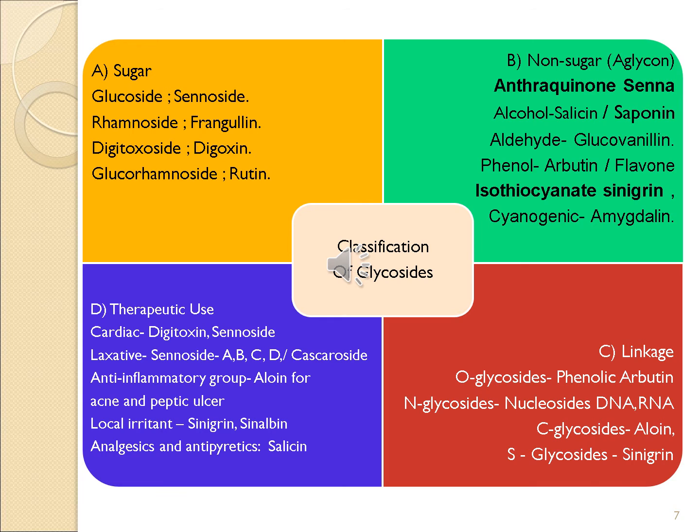The third category is based on linkage — which element is present as a link between sugar and non-sugar. If oxygen is a link, it is called O-glycoside, for example phenolic arbutin. If nitrogen is a link, it is called N-glycoside. If carbon is a link, it is called C-glycoside, for example aloin. If sulfur is a link, it is called S-glycoside, example sinigrin.